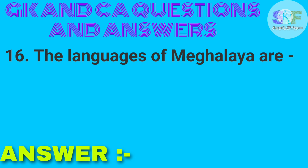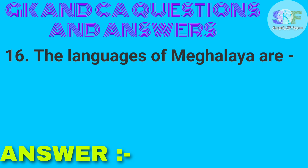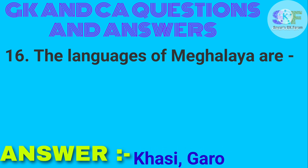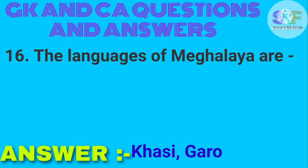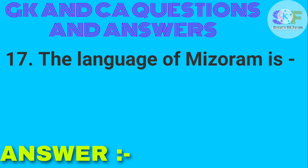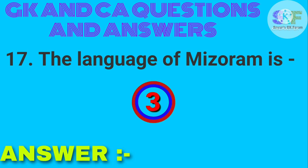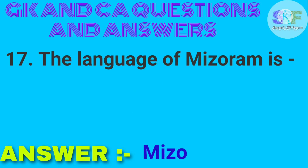The languages of Meghalaya are Khasi and Garo. The language of Mizoram is Mizo.